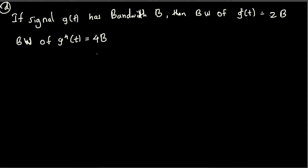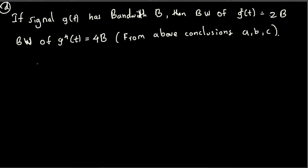From the conclusions of parts A, B, and C, therefore we can say: bandwidth of g^n(t) = n × bandwidth of g(t). That's basically it. I hope you guys find this video helpful — thanks for watching, don't forget to subscribe to my channel. See you in my next video!